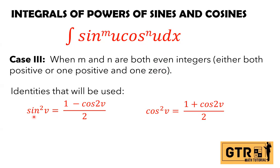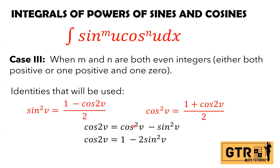These are the identities we are going to use: sine squared v equals (1 minus cosine 2v) over 2, and cosine squared v equals (1 plus cosine 2v) over 2. These were derived using the double angle formula: cosine 2v equals cosine²v minus sine²v. Using the Pythagorean identity cosine²v plus sine²v equals 1, we substitute and get cosine 2v equals 1 minus 2 sine²v. Solving for sine²v gives us (1 minus cosine 2v) over 2.